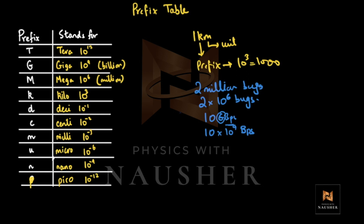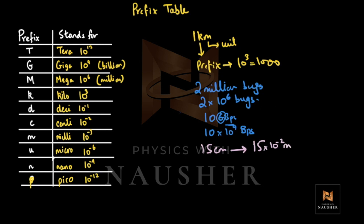For example: the length of a pencil is 15 centimeters, and you need to convert to meters. Go to the table — centi is 10 raised to power minus 2. So 15 cm = 15 × 10⁻² meters = 0.15 meters. The trick is to remember the value of the prefix. Centimeter to meter: minus 2. Millimeter: minus 3. Micrometer: minus 6.